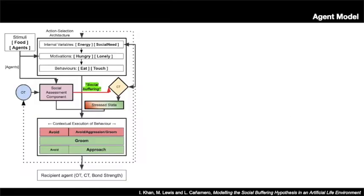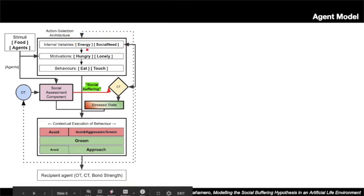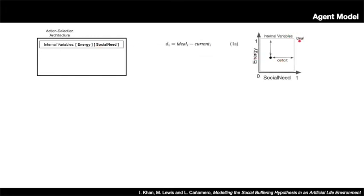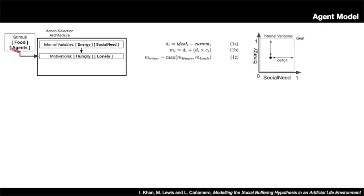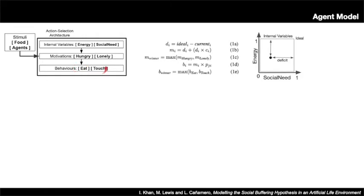Each of our agents is endowed with an agent model driven by the homeostatic control of two internal variables: energy and social need. The goal of the model is to maintain these two variables at their maximum value by correcting any deficit through error-correcting behaviours. It selects behaviour by accounting for the deficits of each internal variable, the availability of external resources, and combining them to calculate an intensity for each motivational state. These motivational states are then mapped onto an appropriate behaviour that would satisfy those internal variables.